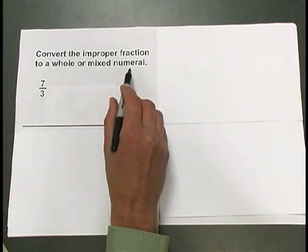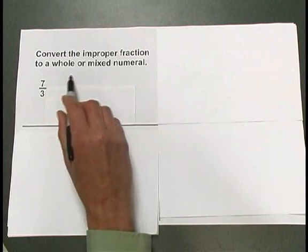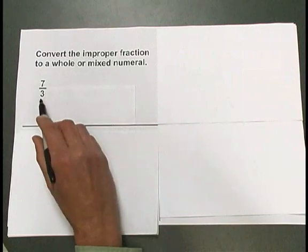Convert the improper fraction to a whole or mixed numeral, 7 thirds.